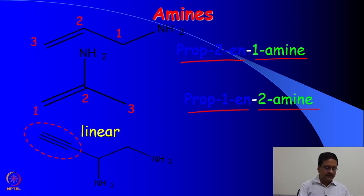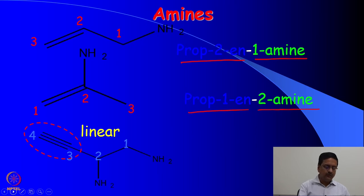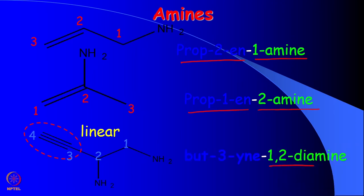The third compound has a 4-membered chain — 1, 2, 3, and 4 — with two amino groups. So it must be a diamine; we write it as 1,2-diamine. Being a derivative of butyne with a C≡C triple bond at position 3, we write it as 3-yne. So the name directly signifies the particular molecule: but-3-yne-1,2-diamine.